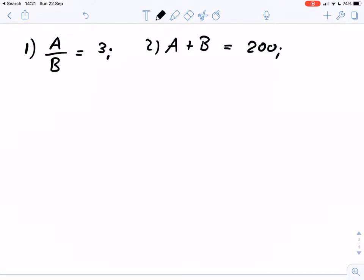So here, for example, let's use equation 1. We can say A over B equals 3, or we bring the B to the other side, and then we have A equals 3 times B.